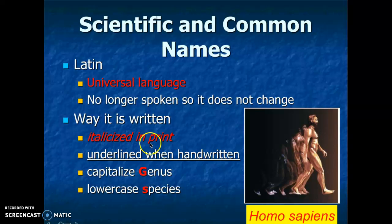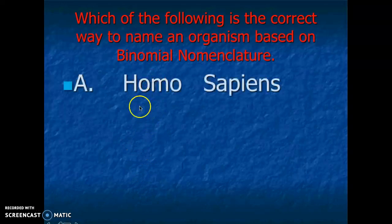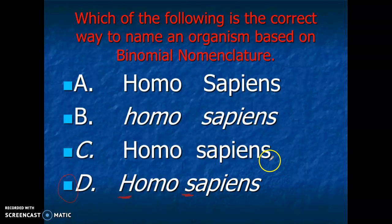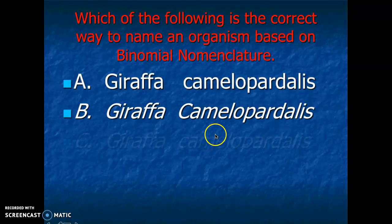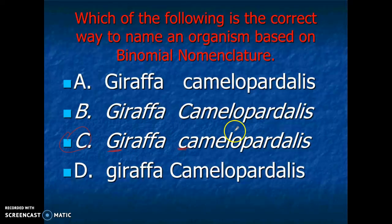The way that we write these names: we have to make sure that we italicize in print. If we handwrite it, we need to underline it. You capitalize the genus, and you need to make sure that you put the species in lowercase. So for Homo sapiens — capital genus, lowercase species, all italicized. Here's another example: this one is not even italicized, this one is italicized but has a capital species — so you want to make sure everything matches: all italicized, capital genus, lowercase species.